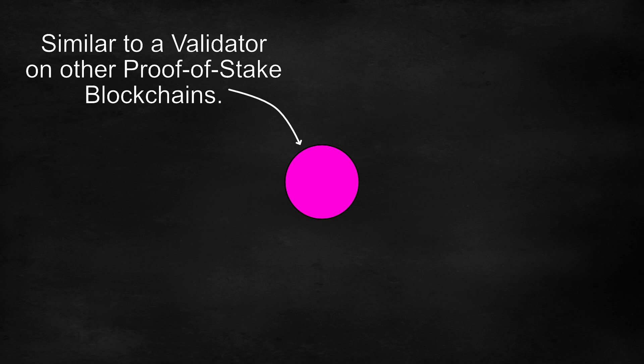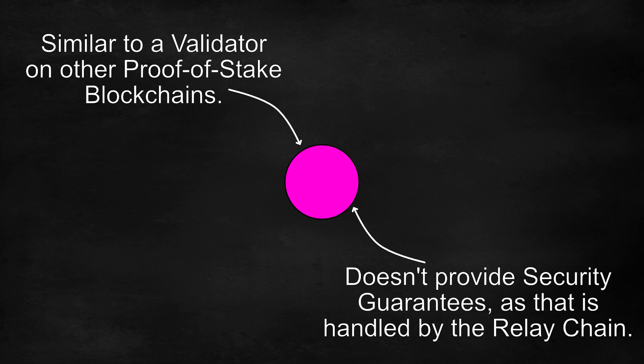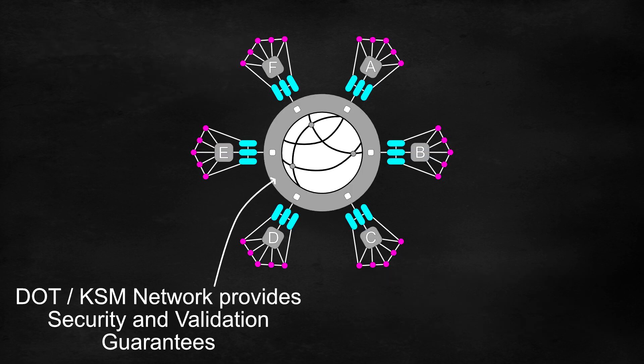A collator is similar to a validator on other proof of stake blockchains. However, collators do not provide security guarantees as that is handled by the Polkadot or Kusama relay chain.